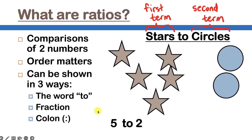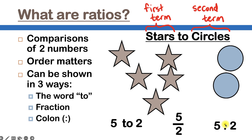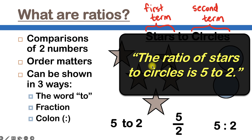But don't forget, there are two other ways to write this. One is as a fraction, and that would be five over two. And the other is using the colon, which is just those two dots, and we would write five colon two. Even though there are three ways to write it, there's only one way to read it, and that would be: the ratio of stars to circles is five to two.